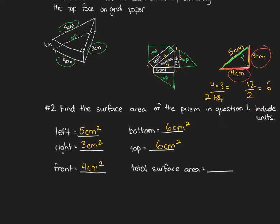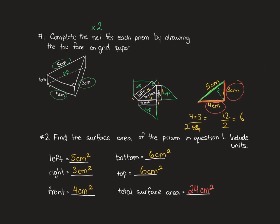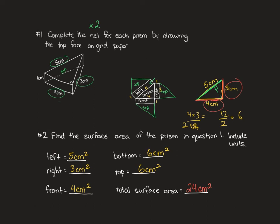Now, what would the total surface area be? So it would be 24, and our unit doesn't change, centimeters squared. So remember, there's two examples for question one and for question two, because they are connected to each other.